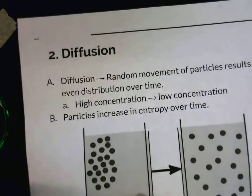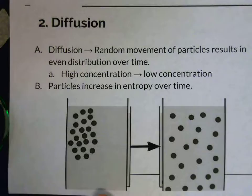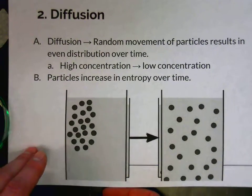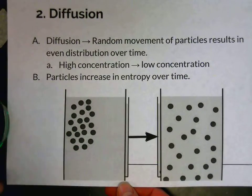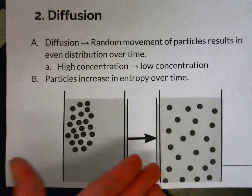Particles are moving randomly. And as a result, they move from high concentration to low concentration, and they also increase in entropy. So they are moving towards what is more likely or more probable.